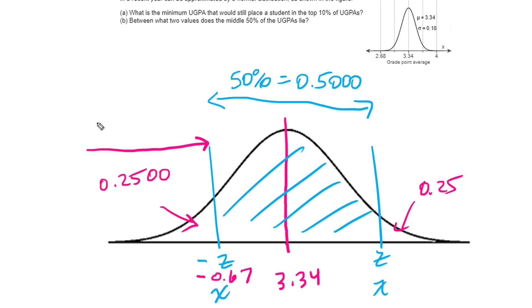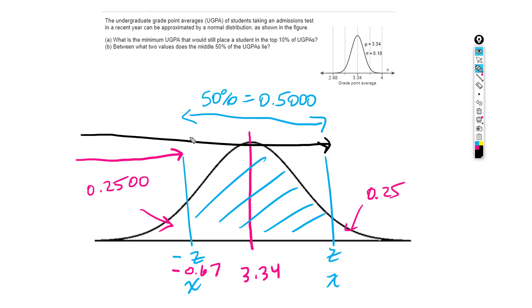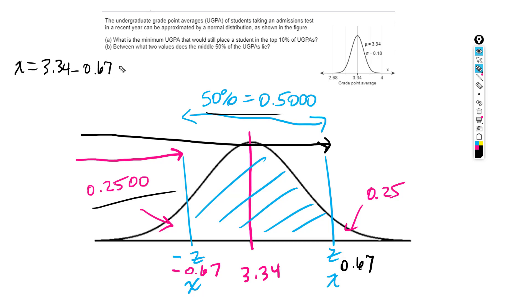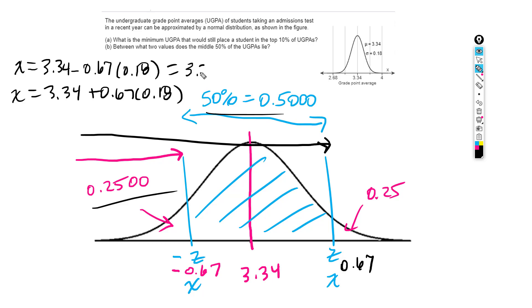You could also go back to the table and look up this z-value by taking 25% plus 50% which equals 75%, but I don't need to because I know this is symmetric, so the upper z is positive 0.67. Thus, the lower x equals 3.34 minus 0.67 times the standard deviation, and the upper x equals 3.34 plus 0.67 times the standard deviation. With rounding I get 3.22 and 3.46. The whole idea is that you really have to understand how to read the z-table.